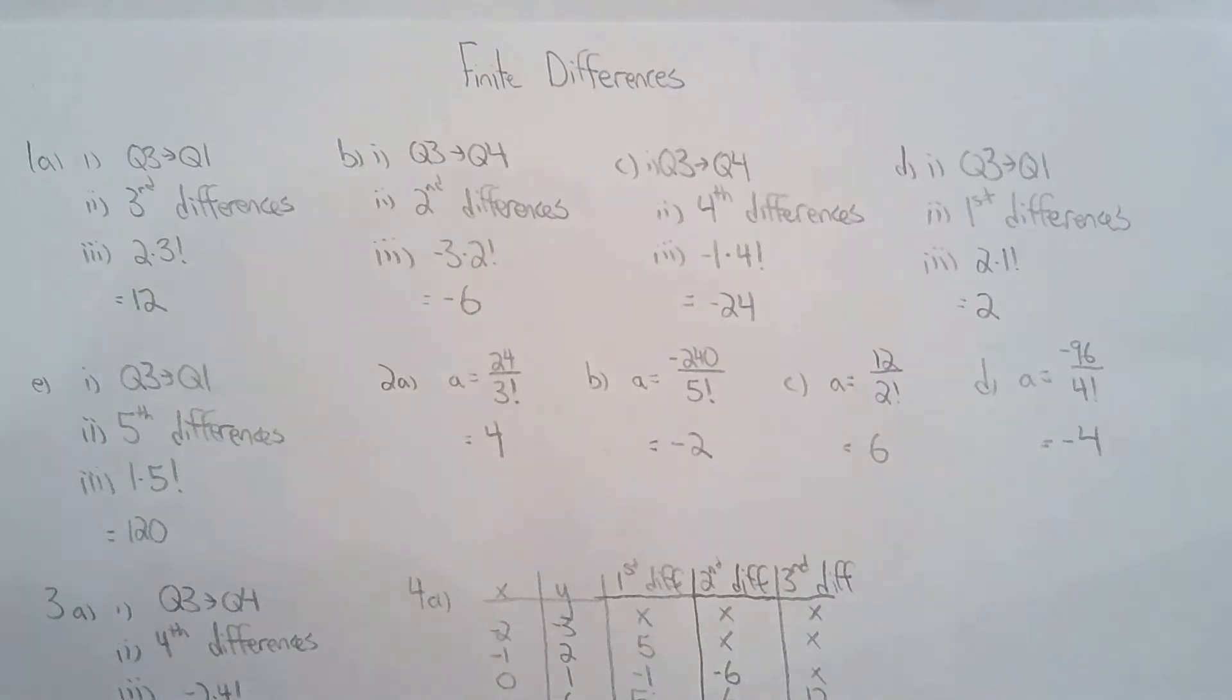To determine the n behavior, just look at the leading coefficient and the degree. Once I know the degree, for example for 1a, I know that its third differences will be constant because it's degree 3. I also have the formula where the nth difference equals the leading coefficient times n factorial, where n is the degree of the polynomial, to help solve for the nth differences.